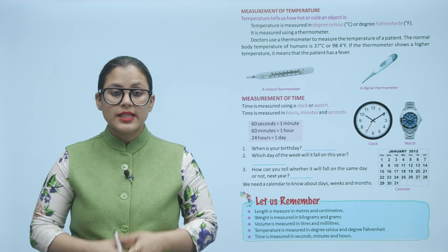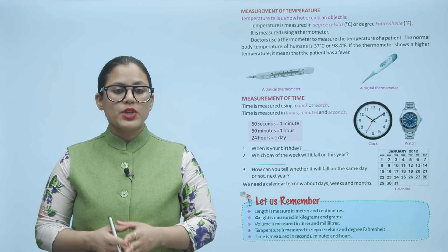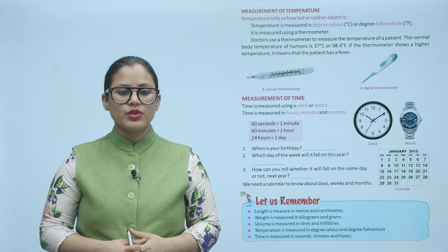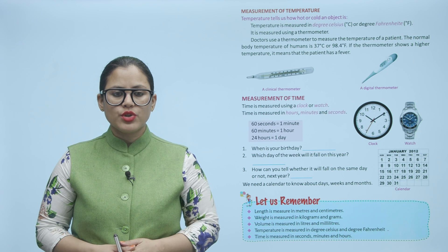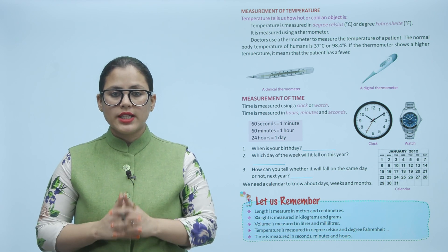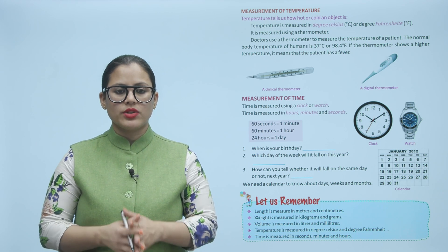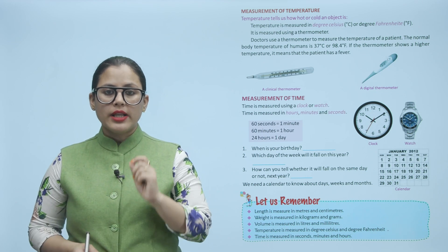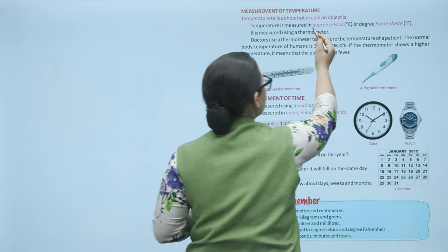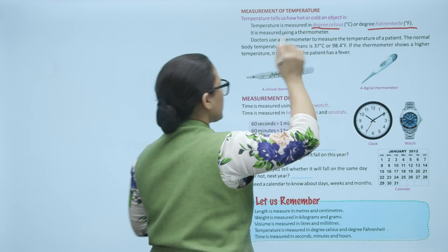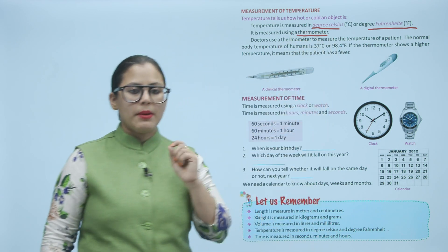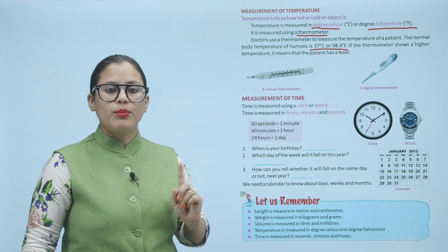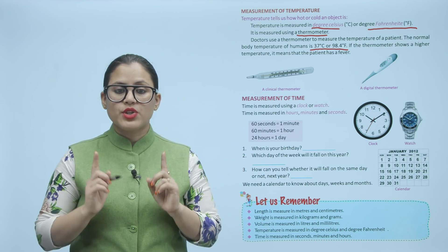Measurement of temperature. Temperature tells us how hot or cold an object is. Temperature is measured in degree Celsius or degree Fahrenheit. It is measured using a thermometer. Doctors use a thermometer to measure the temperature of a patient. The normal body temperature of humans is 37 degree Celsius or 98.4 degree Fahrenheit. If the thermometer shows a higher temperature, it means that the patient has a fever. Temperature is measured in degree Celsius or degree Fahrenheit using a thermometer. Always remember that body temperature is 37 degrees or 98.4 degree Fahrenheit. If body temperature is more than this range, that means the patient has fever.